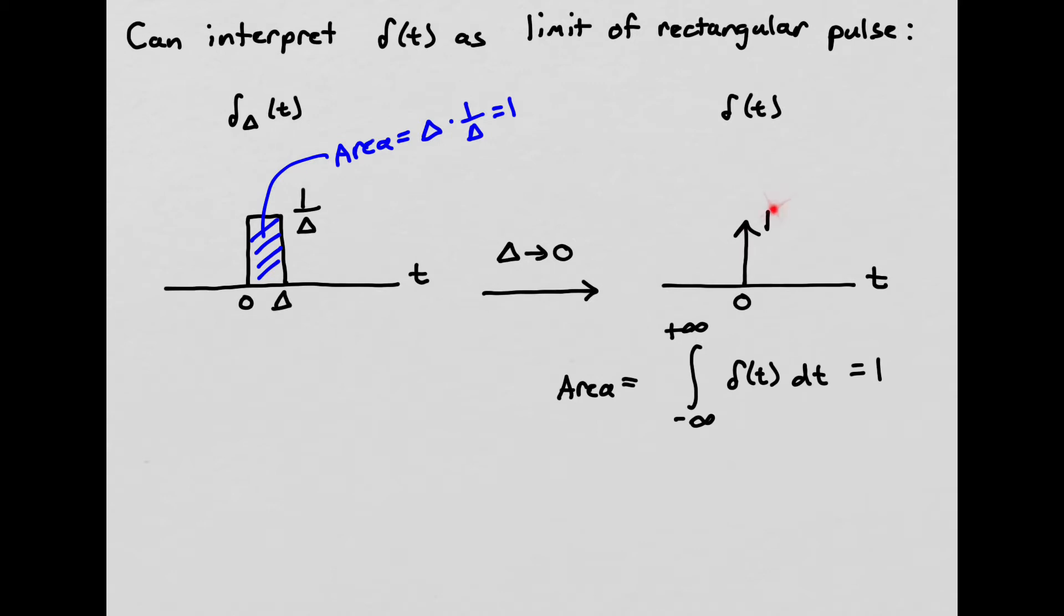But why do we have this 1 right here? This 1 right here is equal to the area associated with that impulse. Because as delta goes to 0, this area is always going to be 1, because the area is just delta times 1 over delta. So this is the area. So if we were to integrate this continuous time impulse, we would get an area that's equal to 1.